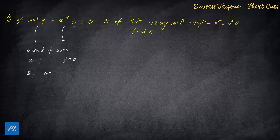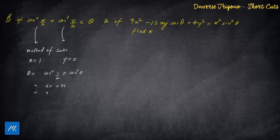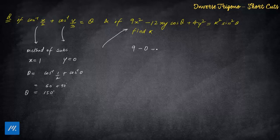With x = 1 and y = 0, the value of theta becomes cos inverse (1/2) plus cos inverse (0), which is 60 degrees plus 90 degrees — so theta equals 150 degrees. The expression 9x² minus 12xy becomes 9 minus 0 plus 0 = 9. This is why y = 0 was chosen: two of the terms become zero.